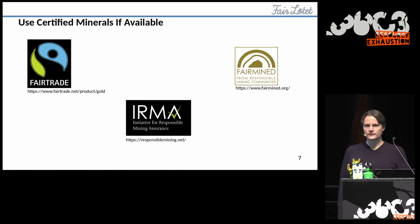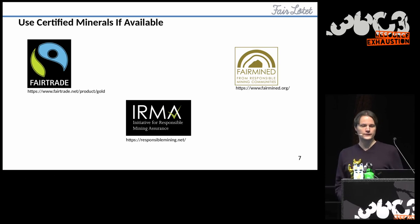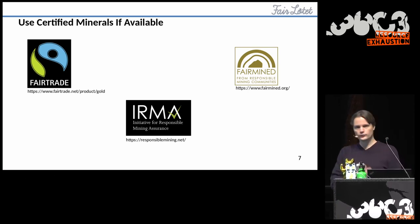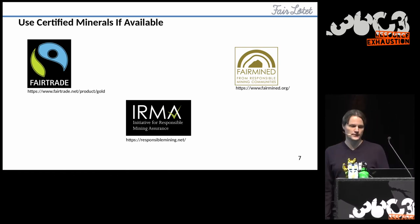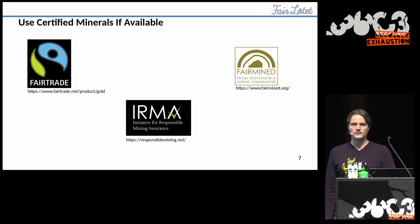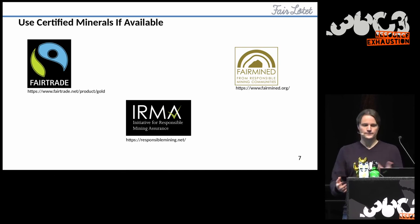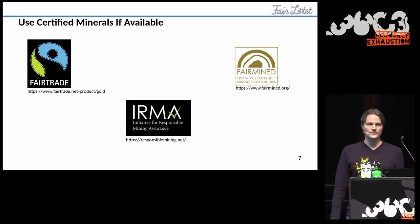The first one is that there do exist some certifications that rule out certain human rights violations. For instance, you know the fair trade label from bananas or coffee — and there exists a fair trade certification for gold. There also exists another certification, Fairmined, also for gold. These do rule out a good part of these human rights violations. There's another standard, IRMA, which is in the process of being established and applies to more materials that come from mining. But the problem with all these certifications is that they are not broadly available — in each case, there only exist a few mines that have a certification. So there does not seem to be a huge demand for certified metals at the moment, and I think this is one of the things that needs to change.